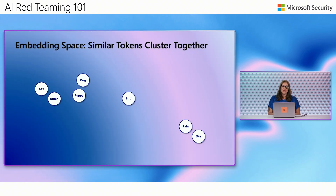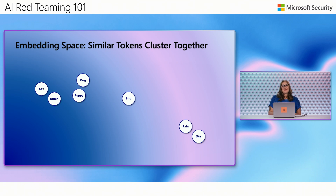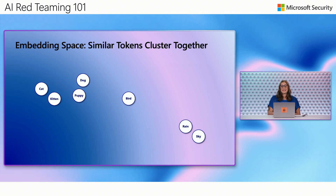Each token gets turned into a vector — a list of numbers that captures its meaning and how it relates to other tokens. These embeddings place similar concepts close together in the vector space. For example, cat and kitten are close together, and they're closer to puppy and dog than they are to bird. Our embeddings are very high-dimensional, but the relationships between these vectors is how concepts get mapped. The transformer architecture, which is used in every major generative model today, lets the model pay attention to different parts of the input at once. It picks up on dependencies across long stretches of text, tracking relationships that might span dozens or even hundreds of tokens. This ability to model context across a full sequence is what allows generative models to produce coherent, useful outputs — and it's also what makes them vulnerable to attacks that tamper with that context.